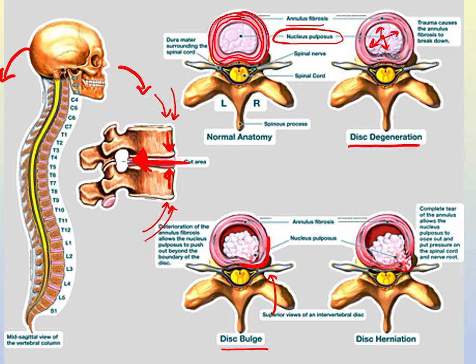A more severe form is disc herniation, where you have an actual rupture of the annulus fibrosis and the nucleus pulposus is extruded. For both disc bulging and herniation, there are therapies including physical therapy and surgical intervention. Disc degeneration happens over a lifetime and is inevitable, but you can also get disc bulges and herniations by lifting something improperly — this bulge is sometimes referred to as a slipped disc.